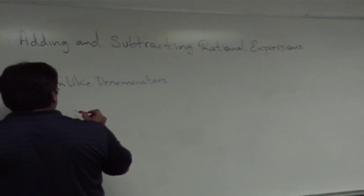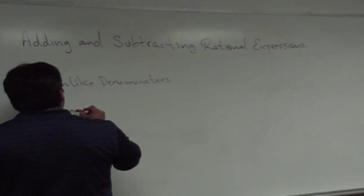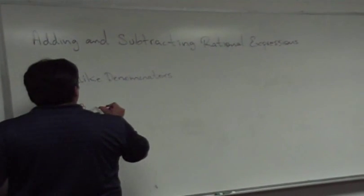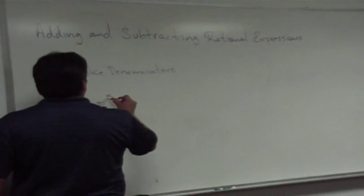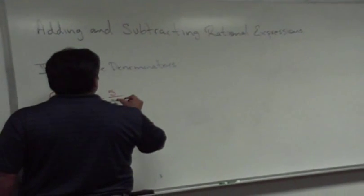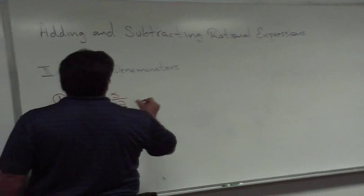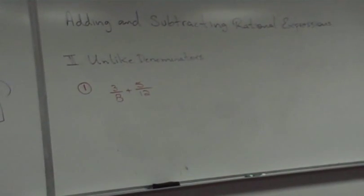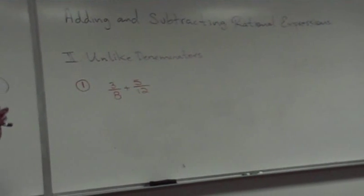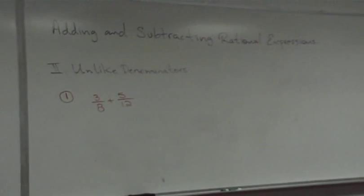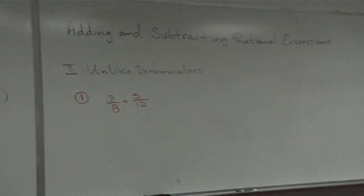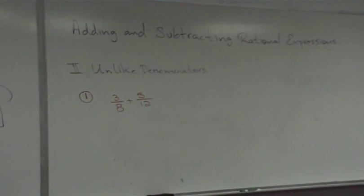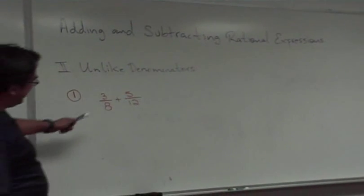Suppose I give you the fraction 3/8 plus 5/12. What's the first thing that catches your eye? Different denominators. Different denominators — you cannot proceed and just add the fractions the way they are. Although this is not the way you probably did it, this is what we're going to do with polynomials. When you see this, when you realize your denominators are different —